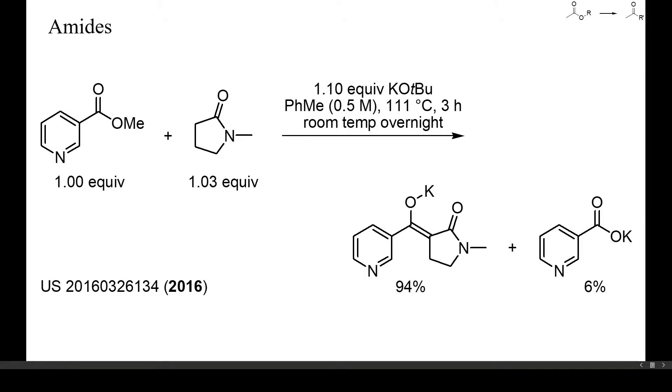Amides are still less acidic than esters, and strong bases are usually required to generate amide enolates. In this example, which is part of a new synthesis of racemic nicotine, NMP was condensed with methyl nicotinate with the aid of potassium tert-butoxide. A small amount of potassium nicotinate was formed as by-product, either from traces of water or by nucleophilic demethylation of the ester.